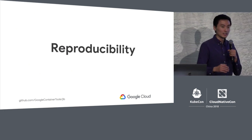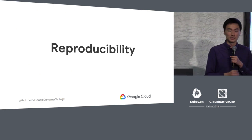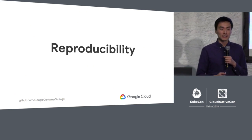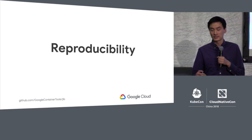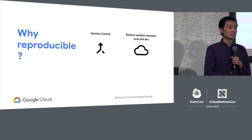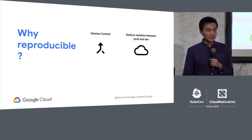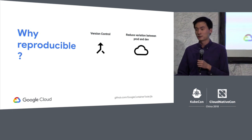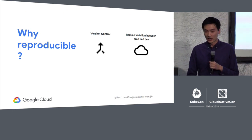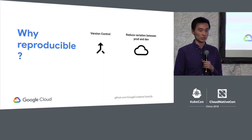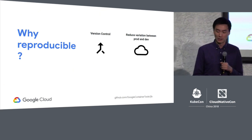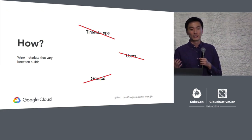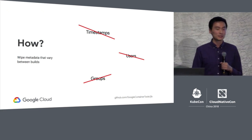Another benefit of a custom image builder like Jib is the ability to build images reproducibly. Reproducibly means that the same code always produces the same image. If you make a change and commit it to your version control system, that commit should produce the same image on your machine, your teammate's machine, your production machine, or CI/CD system. This helps reduce possible variations that could occur in a production build that you can't reproduce locally. We guarantee reproducibility by wiping all metadata that could vary between builds, such as timestamps, user IDs, and groups.